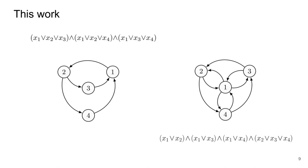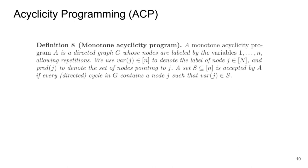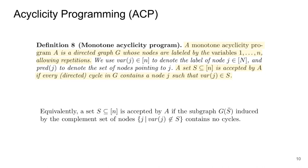One may wonder what access structures a cyclic graph captures in general, or in other words, what classes of monotone predicates can be efficiently expressed in this model? The answer is that our technique can capture any predicate that can be efficiently expressed as an acyclicity program. Acyclicity programming is a new model of computation introduced in this work that we define as follows. A monotone acyclicity program A is a directed graph G, whose nodes are labeled by variables 1 to n, allowing repetitions. Program A accepts a subset of variables S, if and only if every directed cycle in G contains at least one node, whose corresponding variable is in S. This is equivalent to saying that a set S is accepted by A, if the graph resulting from removing all the nodes in S contains no cycles.